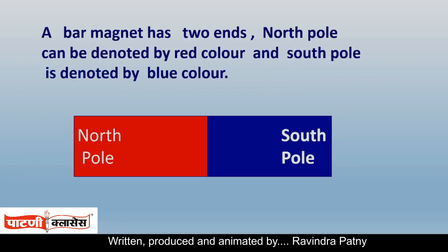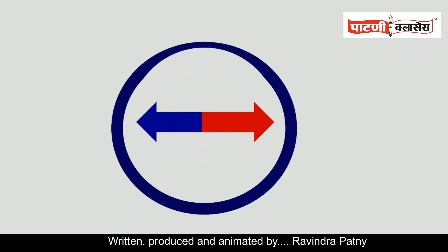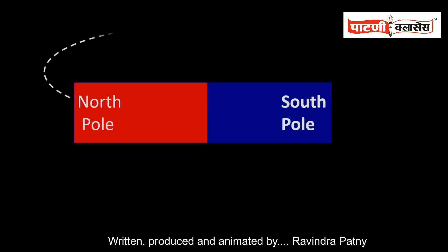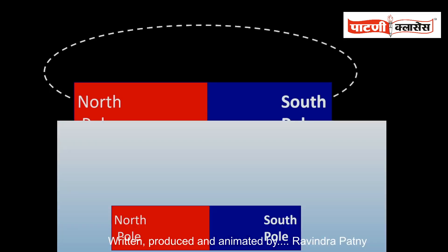A bar magnet has two ends: north pole and south pole. The north pole can be denoted by red color and south pole by blue color — this is the general color coding of a bar magnet. Consider the motion of a magnetic needle in the presence of a magnetic field. If a magnetic needle is allowed to move in a magnetic field, we observe that the north pole moves along a specific path, which is called a magnetic line of force.